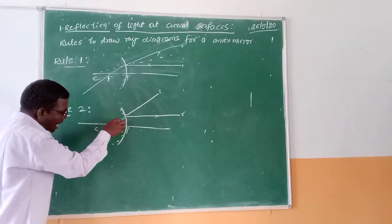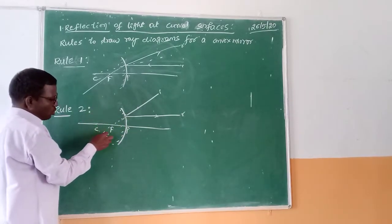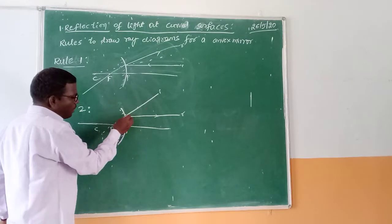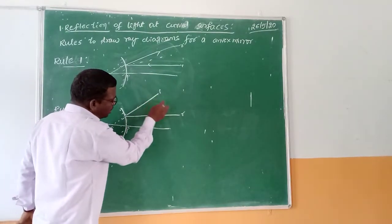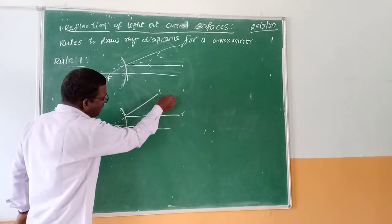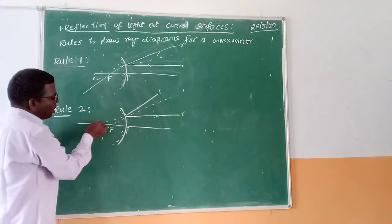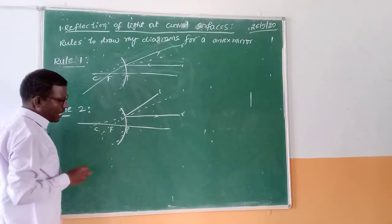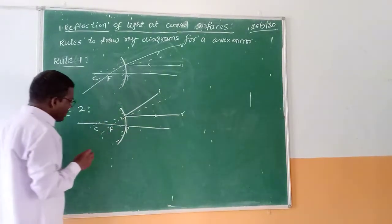The incident ray will travel parallel to the principal axis. And if you extend this incident ray, the incident ray will travel as if it passes through the focus.